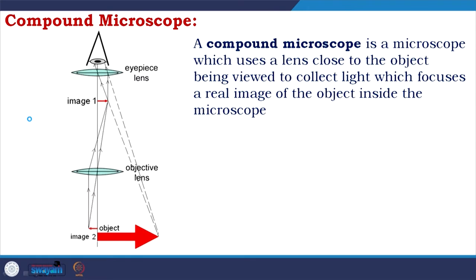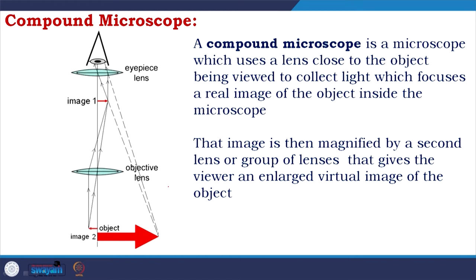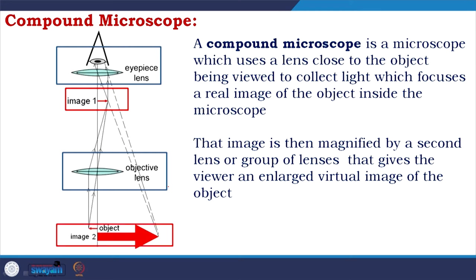A compound microscope uses a lens close to the object to collect light, focusing a real image of the object inside the microscope. It uses an eyepiece lens and an objective lens — the object creates image 1, which is then further enlarged to image 2. The objective lens gathers light from any point of the object and unites it at a point of image, while the eyepiece lens magnifies that real image further.